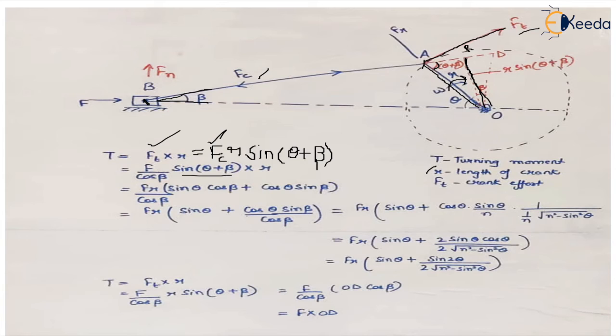If we expand sin(θ + β), it becomes sin θ cos β + cos θ sin β. If we take cos β outside the bracket, it cancels with the denominator for the first term. We are left with F × R × (sin θ + cos θ sin β / cos β).